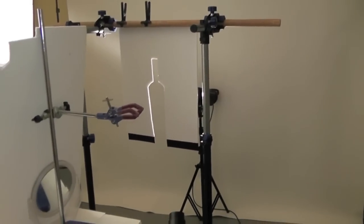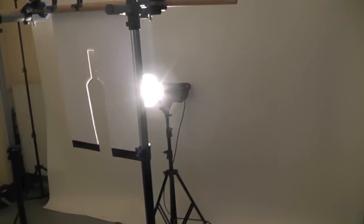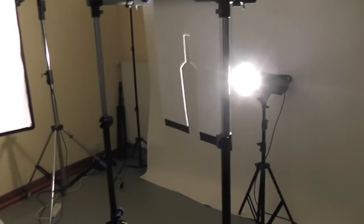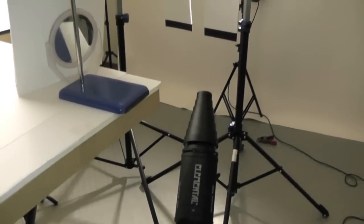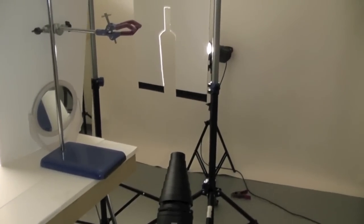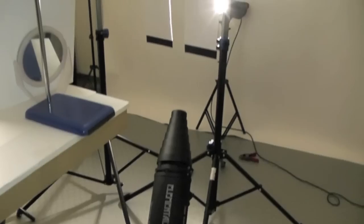Now I know a lot of people want to know about exposures and things. The backlight is a 250 head and it's on a quarter power. The snoot is on a quarter power and it's a 450 head. It loses a lot of light of course because of the snoot.